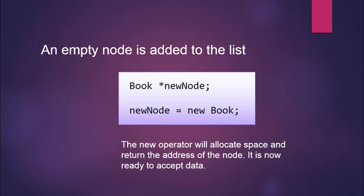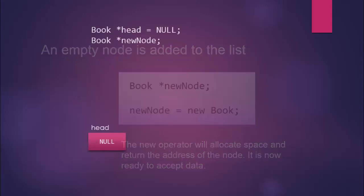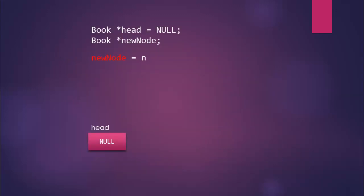If the operation is unsuccessful — if new cannot find space for whatever reason — it will return null. Just like when opening files, we need to verify that the dynamic allocation was successful. If it was not, we want to bypass it and make sure we don't try to write memory into undefined space, because we'll very quickly crash our program.